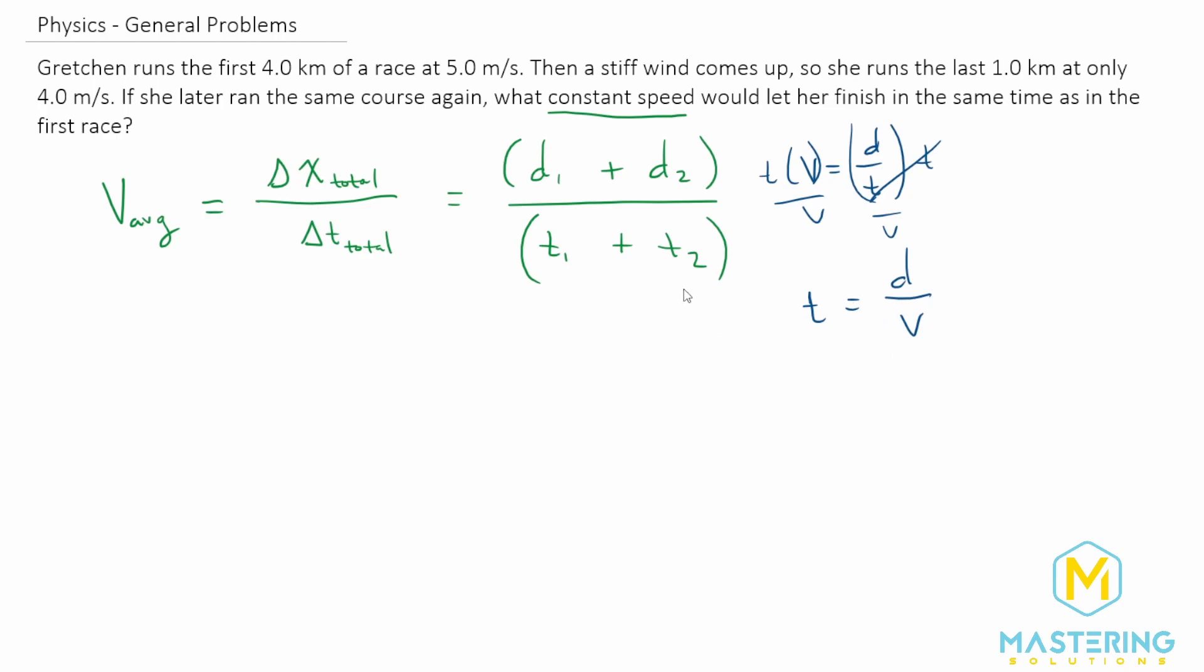So now we can plug this in over here. So the average velocity will be equal to the distance one plus the distance two that she has to run, and then that will be divided by distance one over velocity one plus distance two over velocity two.